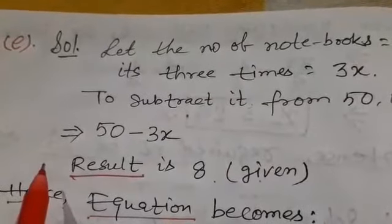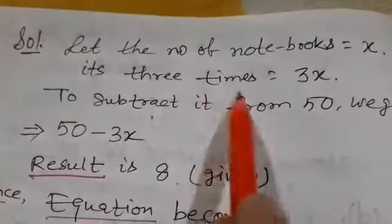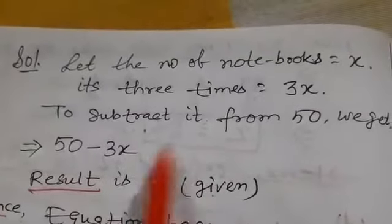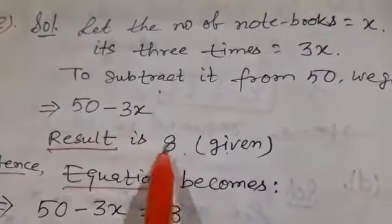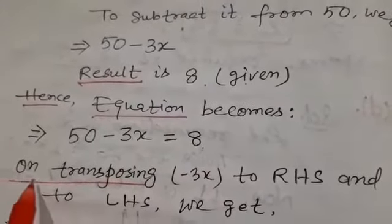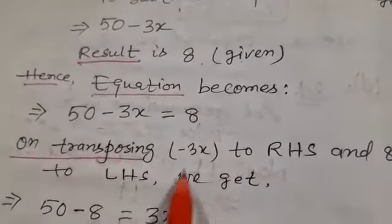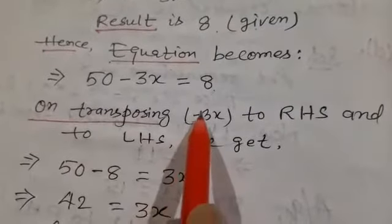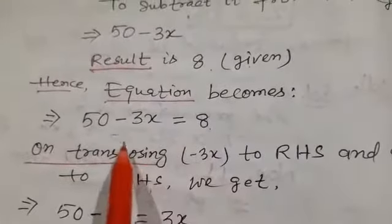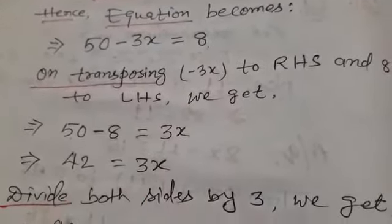For the next question, please read the question from the book. Let the number of notebooks equal to x. Three times the number is 3x. Subtracting it from 50 gives 50 − 3x. The question says the result is 8, so the equation becomes 50 − 3x = 8. Now transposing −3x from LHS to RHS it becomes positive, and 8 moves to LHS becoming negative.